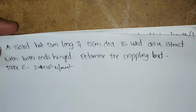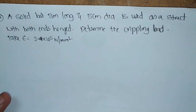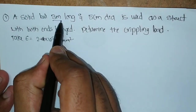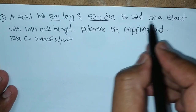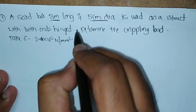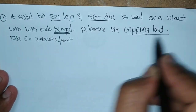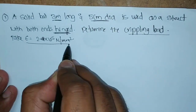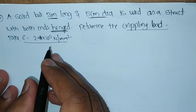See the first problem: a solid bar of 3 meters long, 5 centimeters diameter, is used as a strut with both ends hinged condition. Determine the crippling load. Take E is equal to 2 into 10 to the power of 5 Newton per mm squared.